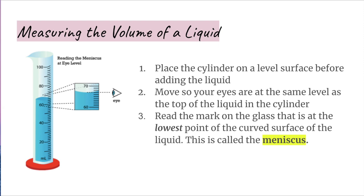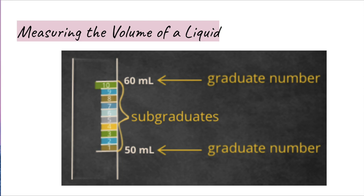When using a graduated cylinder, first place it on a level surface before adding the liquid. After adding the liquid, move so that your eyes are at the same level as the top of the liquid. Read the mark on the glass at the lowest point of the curved surface of the liquid — this point is called the meniscus.